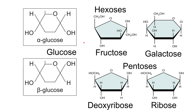The second class of monosaccharides are the pentoses. You don't need to be able to draw them — you just need to know where they are found in organisms. The two types are deoxyribose and ribose. The only difference between these two molecules is that ribose has a hydroxyl group whereas deoxyribose only has a hydrogen; deoxy means without an oxygen.